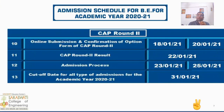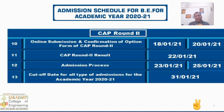After CAP Round 1, if you want to participate in CAP Round 2, you can again fill the option form between 18th January to 20th January 2021. You can again prepare your college choice list or keep it as it is for Round 2. The result of CAP Round 2 will be displayed on 22nd January 2021. You can check the list to know which college is allotted to you. Round 2 is the final round and you have to compulsorily take admission in the allotted college between 23rd January to 25th January 2021.